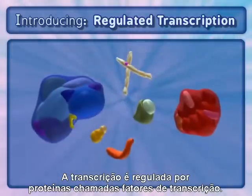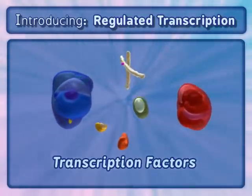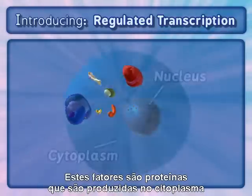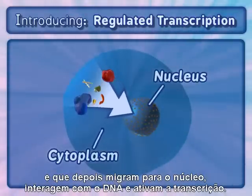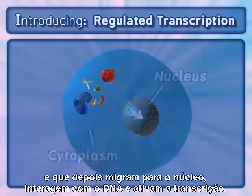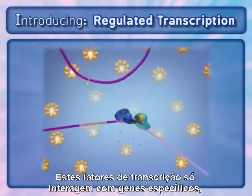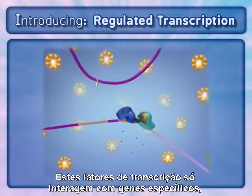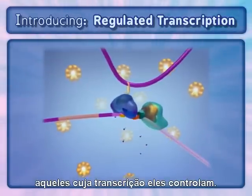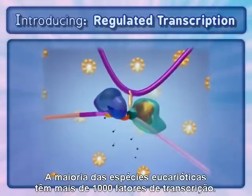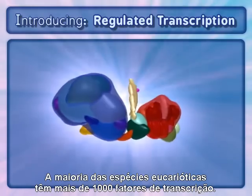Transcription is regulated by proteins called transcription factors. These factors are proteins that are produced in the cytoplasm and eventually migrate into the nucleus, where they interact with DNA and activate transcription. These transcription factors only interact with specific genes — those genes whose transcription they control. Most eukaryotic species have over 1,000 transcription factors.